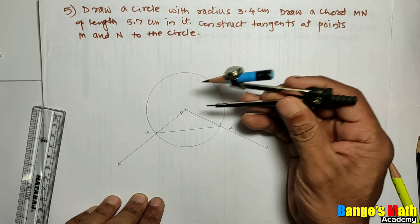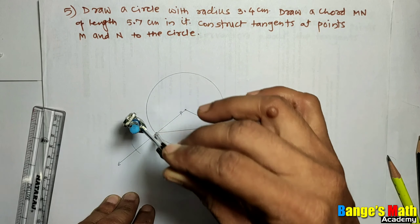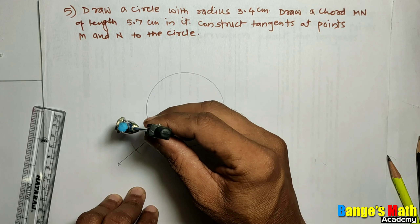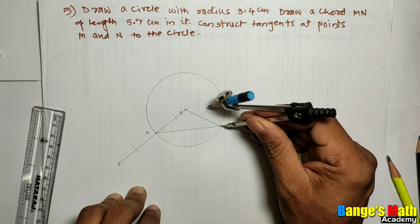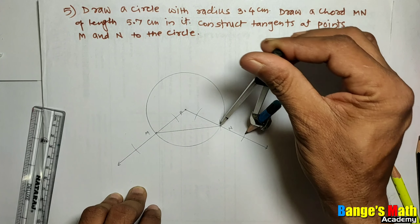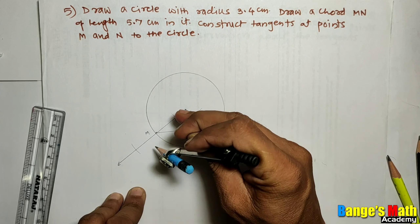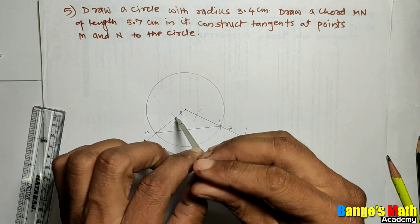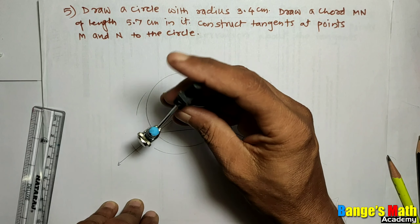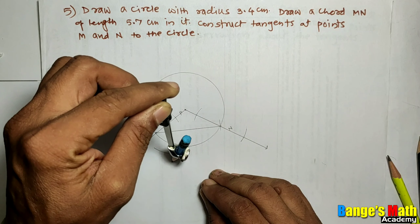Take a suitable distance in your compass, put the still point on point M, and draw arcs to the left and right side intersecting ray PM. With the same distance, put the still point on point N and draw intersecting arcs to ray PN. Then take a distance further apart than half the distance between these two arcs. Put the still point on this point and draw arcs to the upper and lower side. Keeping the distance same, put the still point on the other point and draw an intersecting arc to the previous arc.